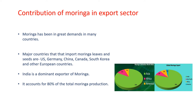Moringa has been in great demand in many countries. The major countries that import Moringa leaves and seeds are the US, Germany, China, Canada, South Korea, and other European countries, especially the UK, Italy, France, Netherlands, and Spain. India has managed to hold a dominant position in the Moringa market for its exports. It accounts for almost 80% of the total production of Moringa leaves and seeds, which helps in fetching crores of foreign exchange for the country.